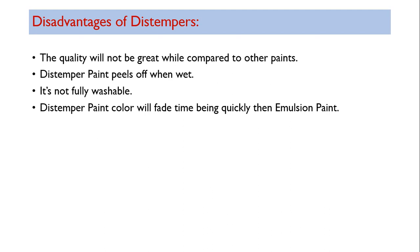The quality is poor compared to emulsion paint and oil paint. Distemper paint peels off when wet. It is not fully washable — for emulsion paints and oil paints you can wash and remove stains very easily, but that is not possible with distempers.